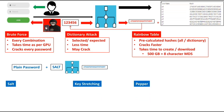The second technique to improve the strength of this system is key stretching. In key stretching, the hashing process is repeated many times.